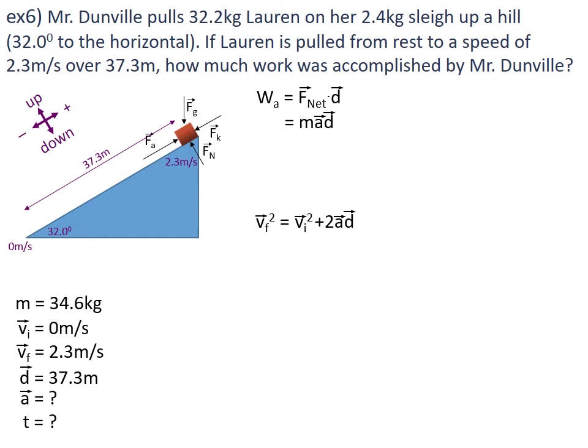The initial velocity is zero, so 0 squared plus 2ad gives us just 2ad. Our equation has been simplified to VF² = 2ad. I want to get acceleration by itself, so I will divide both sides by 2d. The 2d on both sides factors out, giving us acceleration = VF² ÷ (2d).